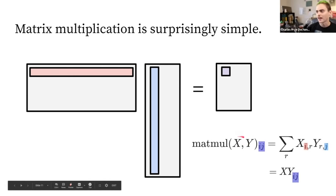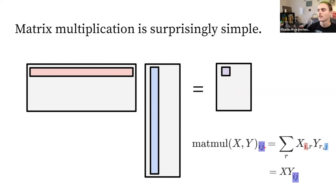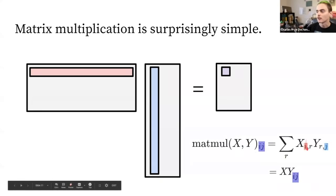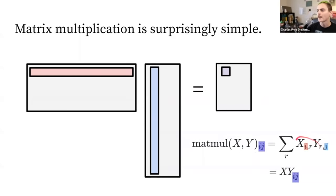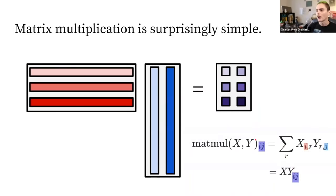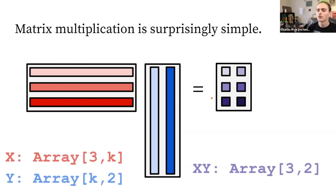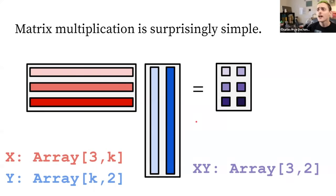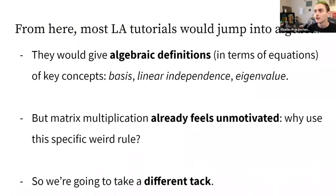Mathematically: if we matrix-multiply X and Y and look at the i-th row and j-th column of the result, we take the i-th row of X, the j-th column of Y, multiply their entries, and sum them up. Matrix multiplication takes two matrices where one has the same number of columns as the other has rows, producing an output with the row count of the first and the column count of the second.